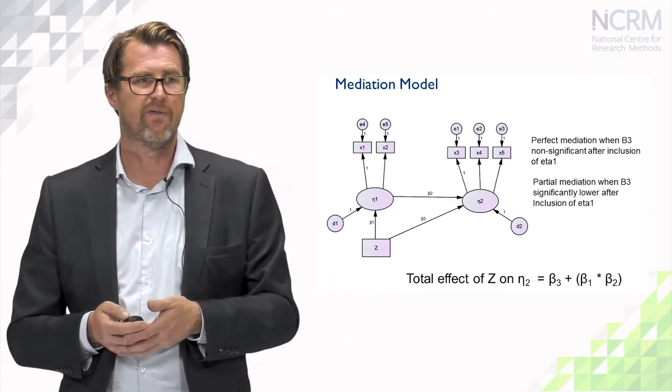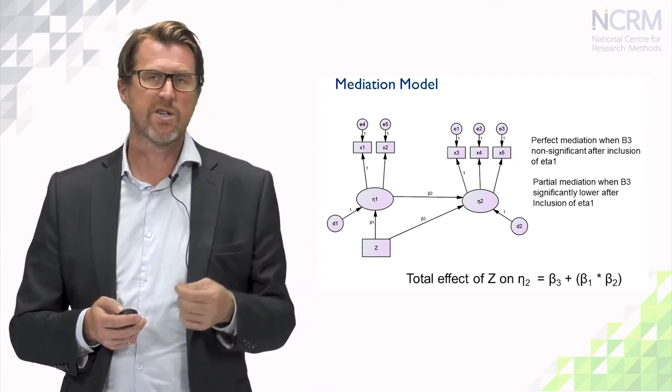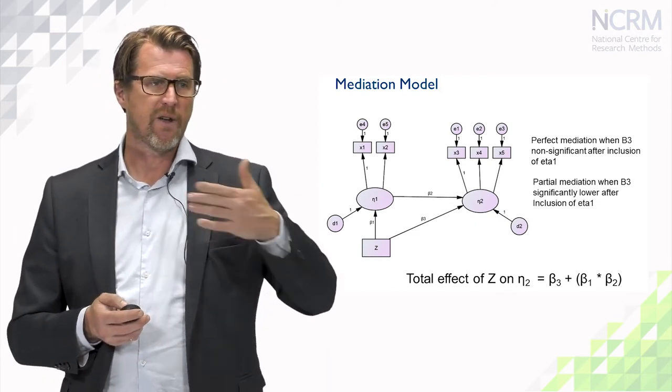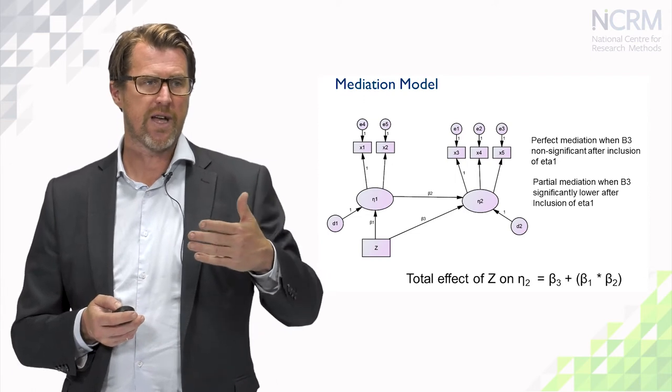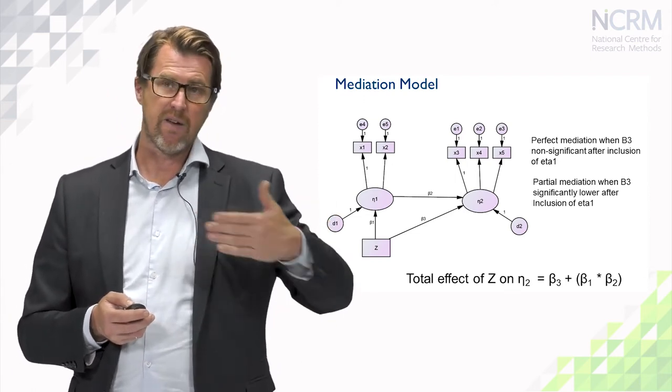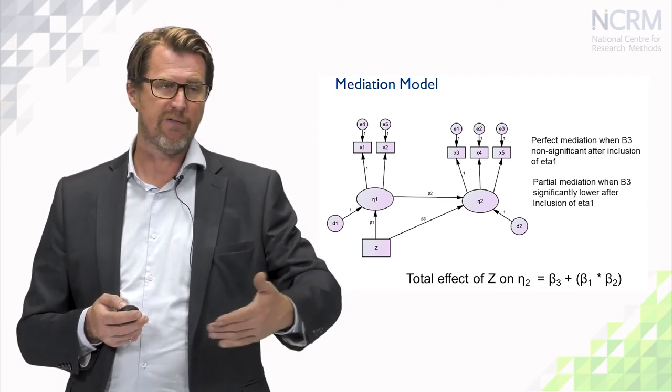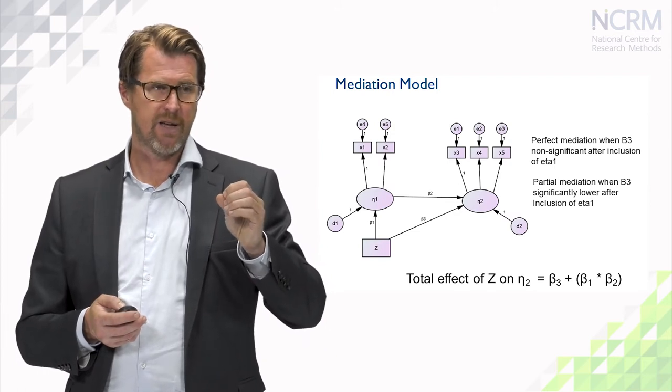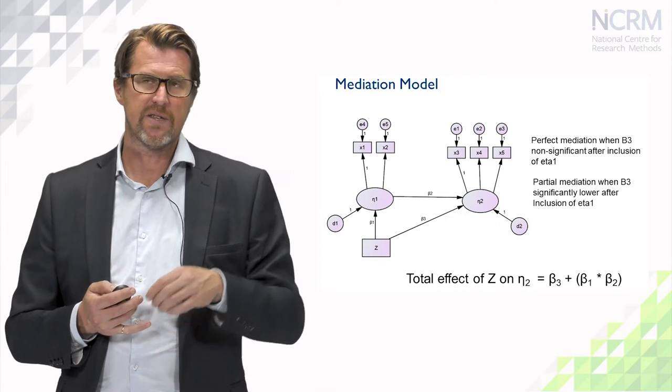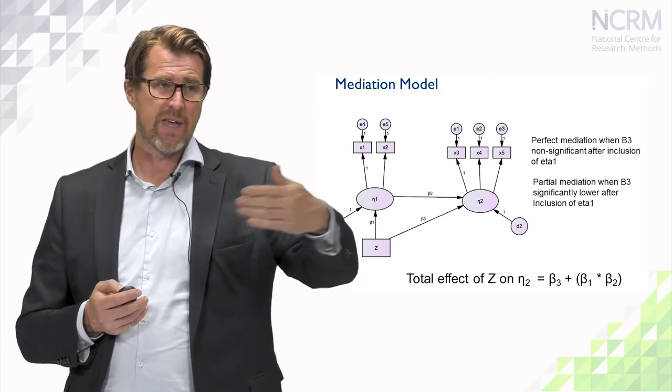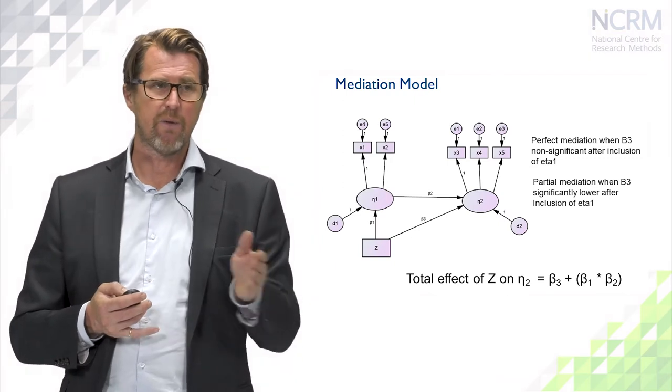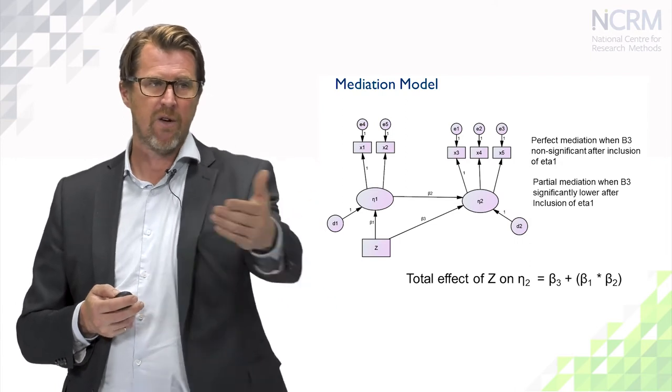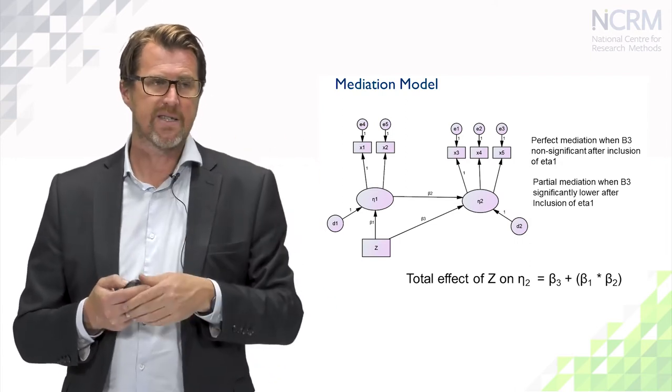We sometimes distinguish between partial and perfect mediation. So for example, if we fitted a model that just regressed eta2 on z, and we found a significant and substantial effect there, then if we add in the eta1 predictor, if the effect of z now becomes non-significant, but the indirect effect is significant, then we would refer to this as perfect mediation. All of the effect of z on eta2 flows through eta1.